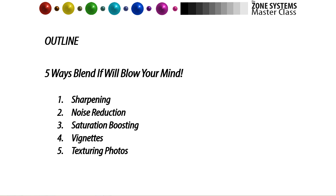I want to set you up for what you can expect in the Zone Systems Master Class by showing you five ways to use Blend If right now in your workflow. The first is sharpening — how to sharpen images in a very deliberate way. Then noise reduction, targeted only to shadows. Then saturation boosting, which gives you a lot of color control. Fourth, vignettes where highlights pop through cleanly. And fifth, texturing photos using Blend If principles.